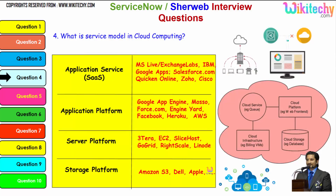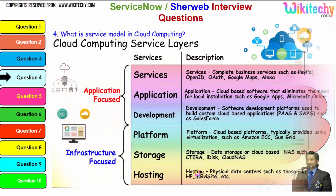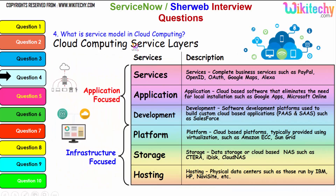Digging further into the service model, the typical examples are: application service, application platform, server platform, and storage platform — with storage provided by Amazon S3, Dell, and Apple. The important service layers include services, application, development, platform, storage, and hosting. These are all important services which will also be asked in interviews about cloud computing.